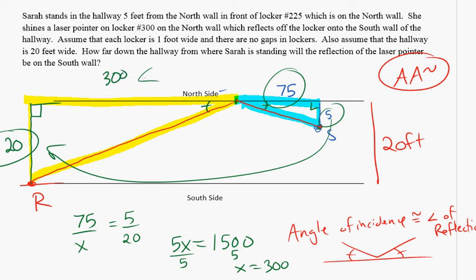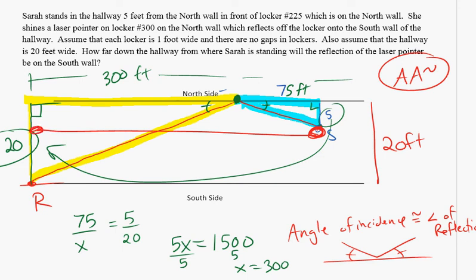So this distance from the reflection on locker 300 to the part of the hallway where the reflection happens on the south side is 300 feet. Now this distance from where Sarah's standing to where she pointed the laser at locker 300 is still another 75 feet. So if we take 300 and add it to 75, the distance from where Sarah is to down the hallway where the reflection is is a total of 375 feet.